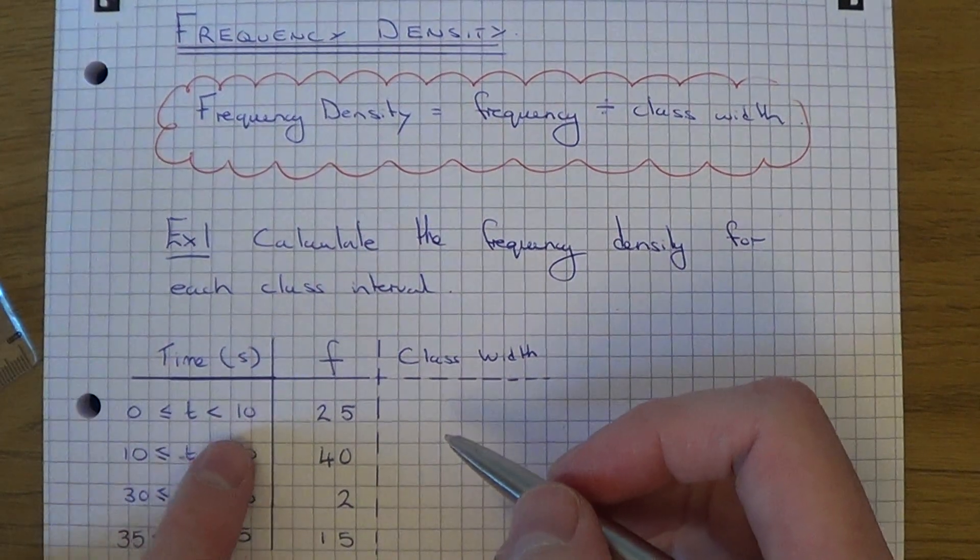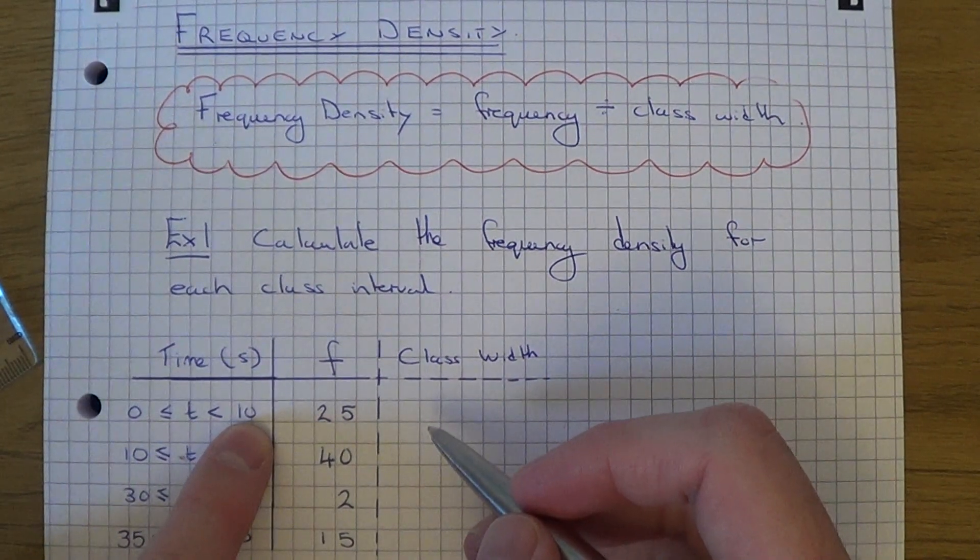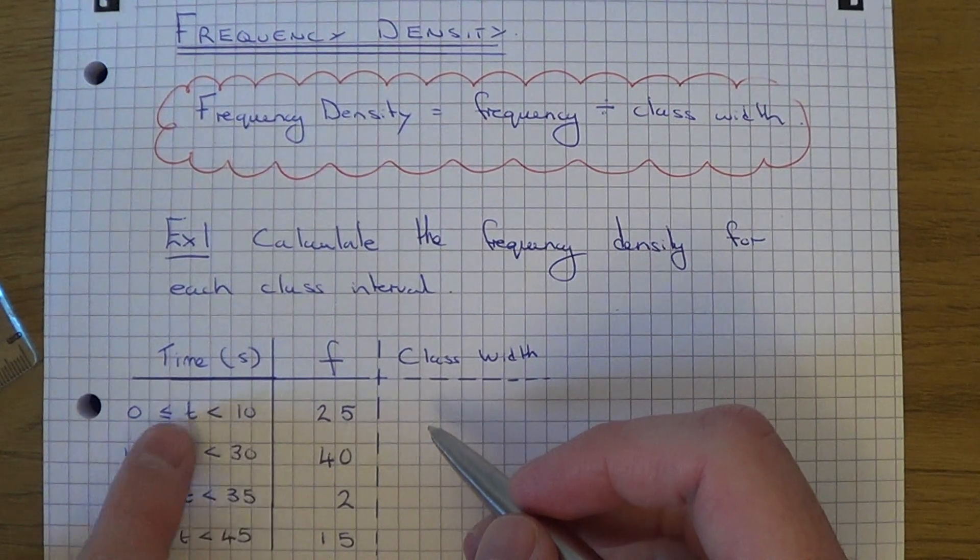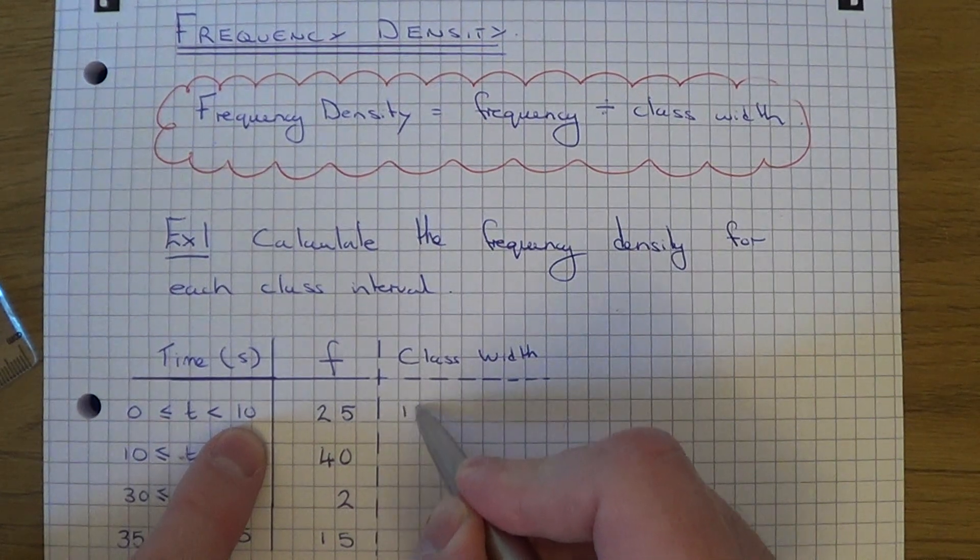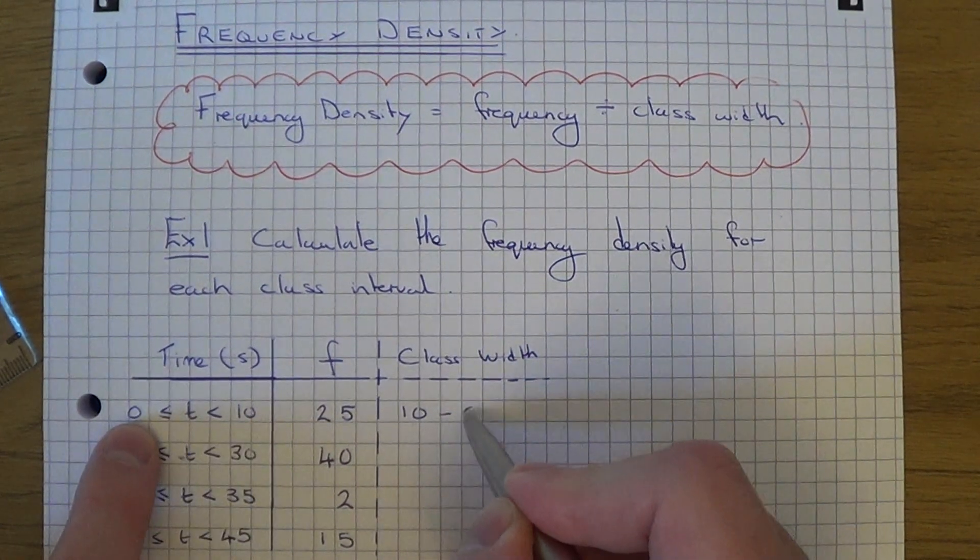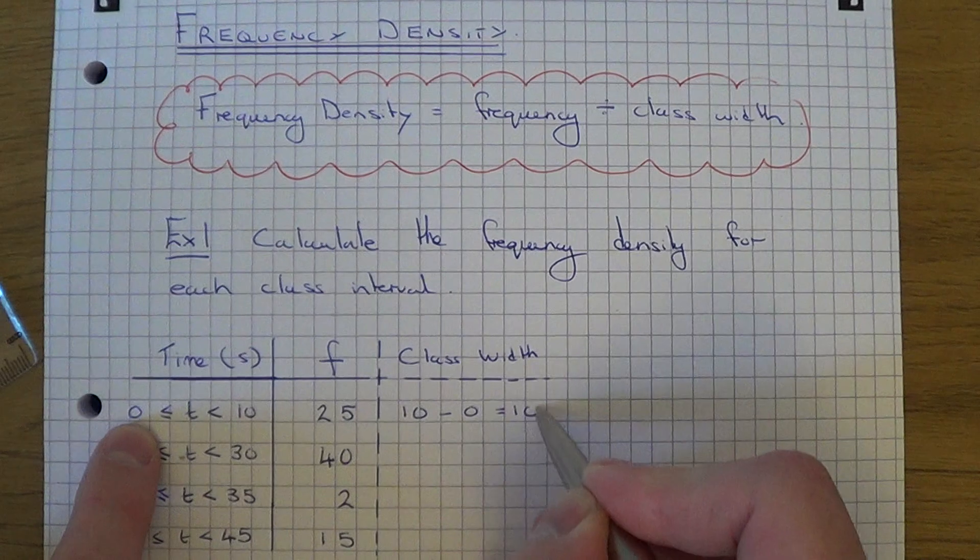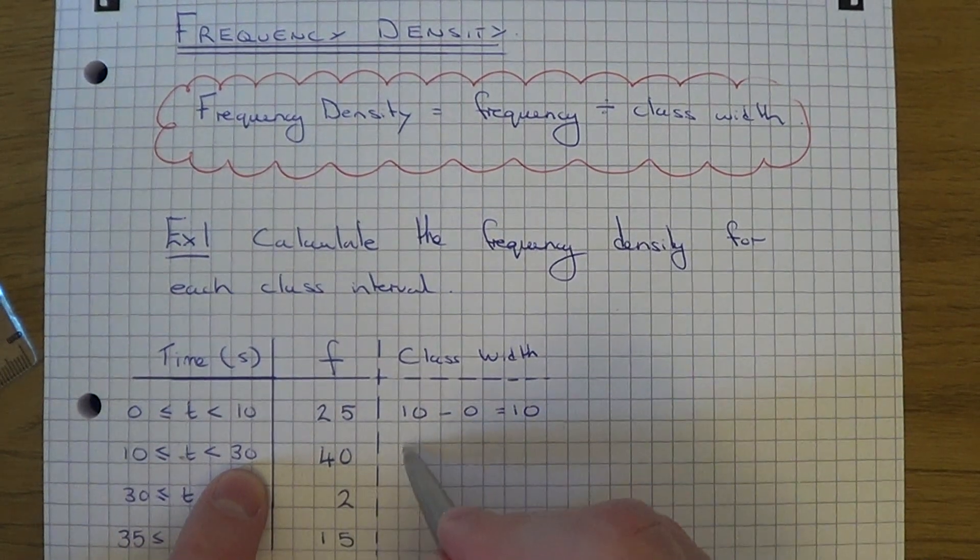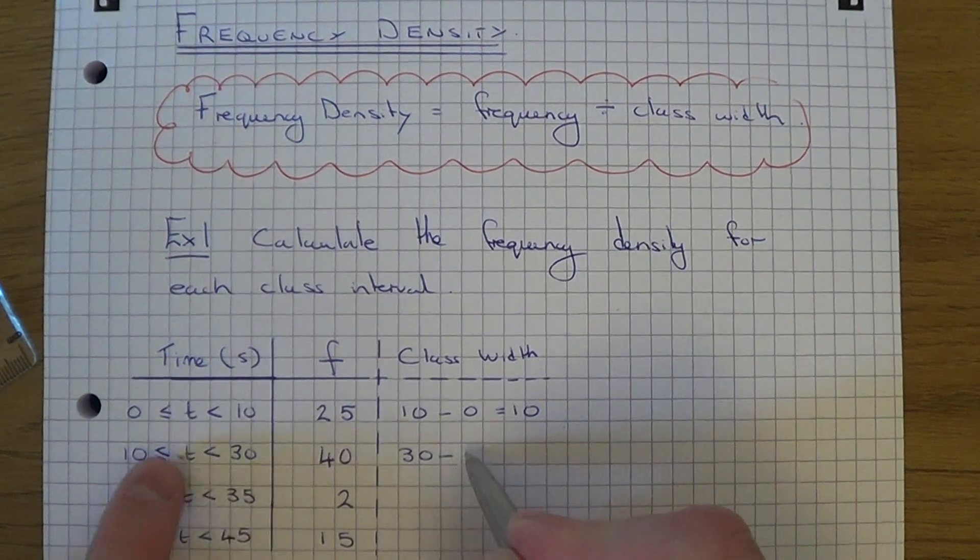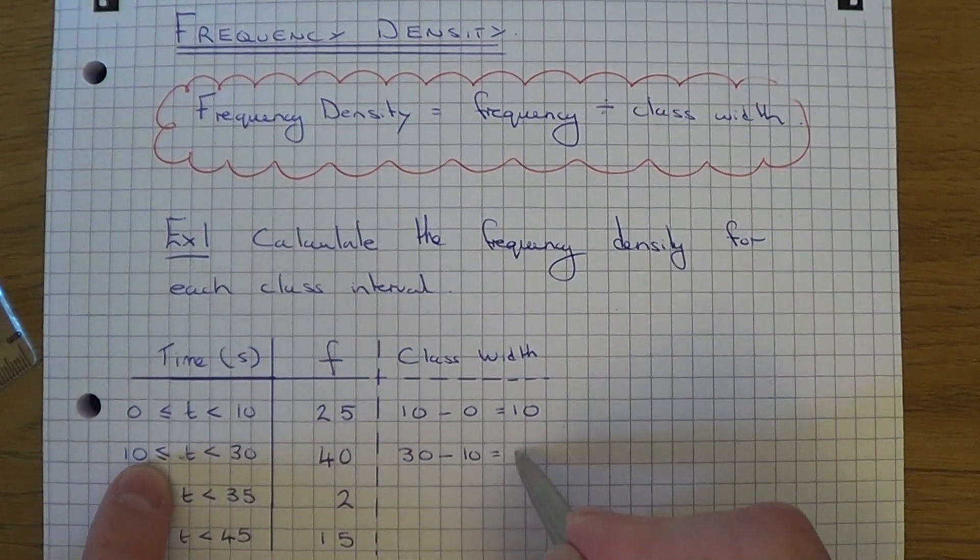The class width is the difference between the upper limit, that's the highest value of the group, and the lower limit, which is the lowest value. So on the first group it would be 10 take away 0, which is 10. For the second one it will be 30 take away 10, which is 20.